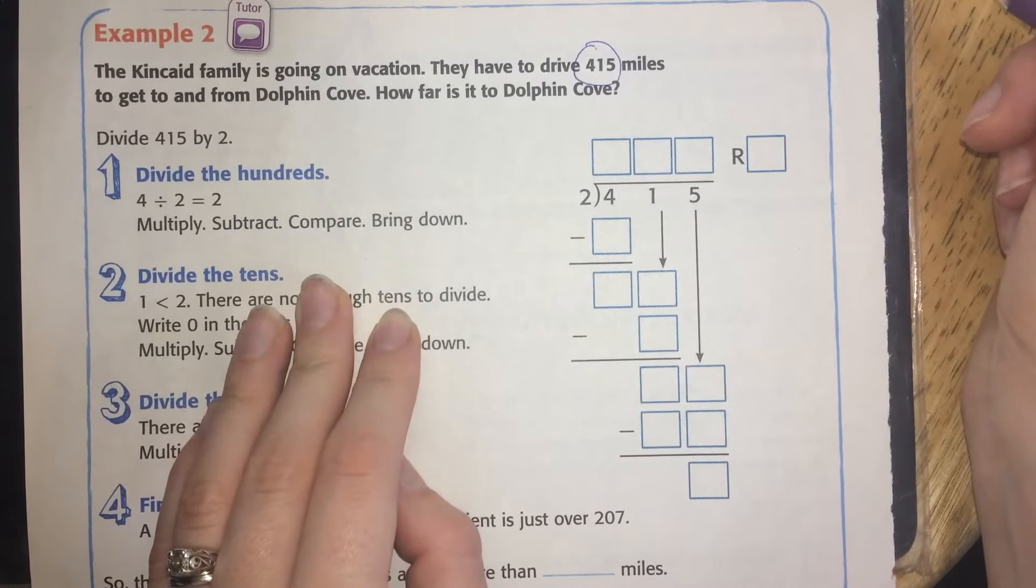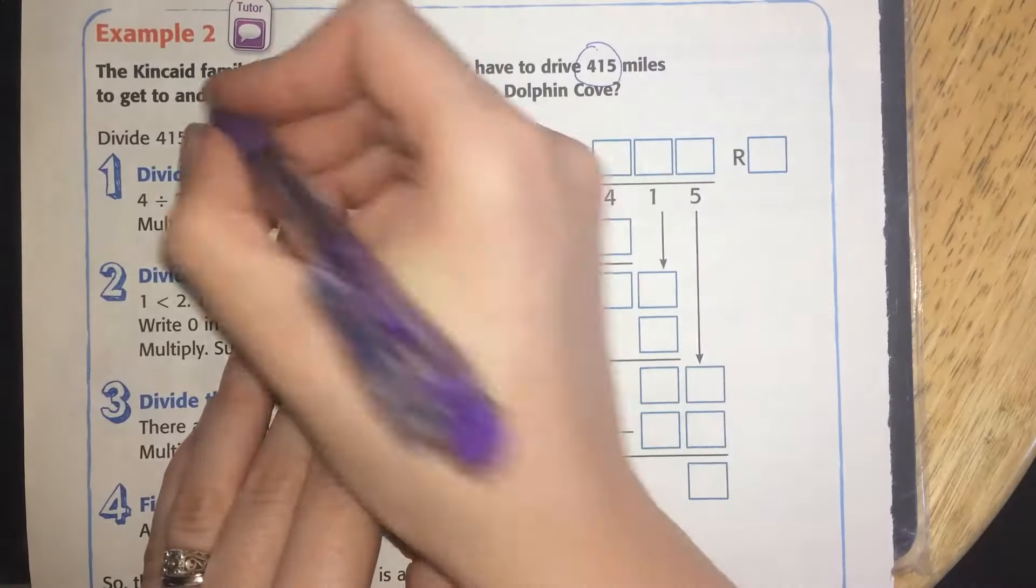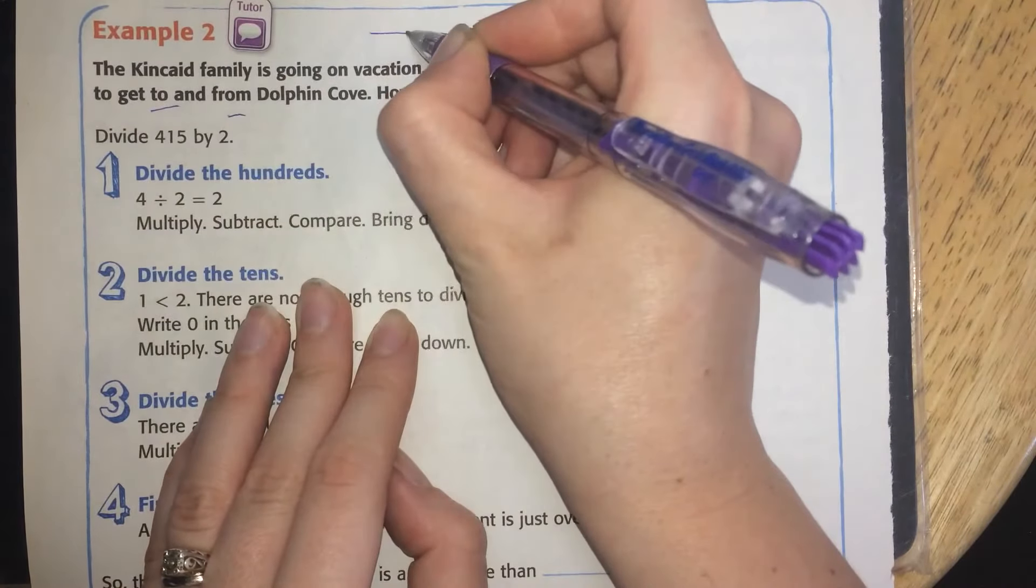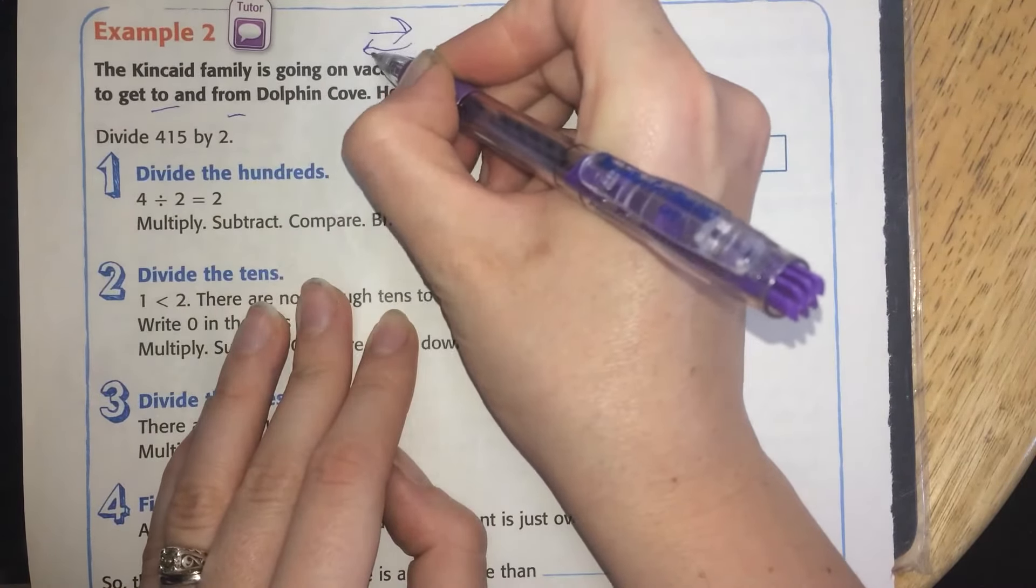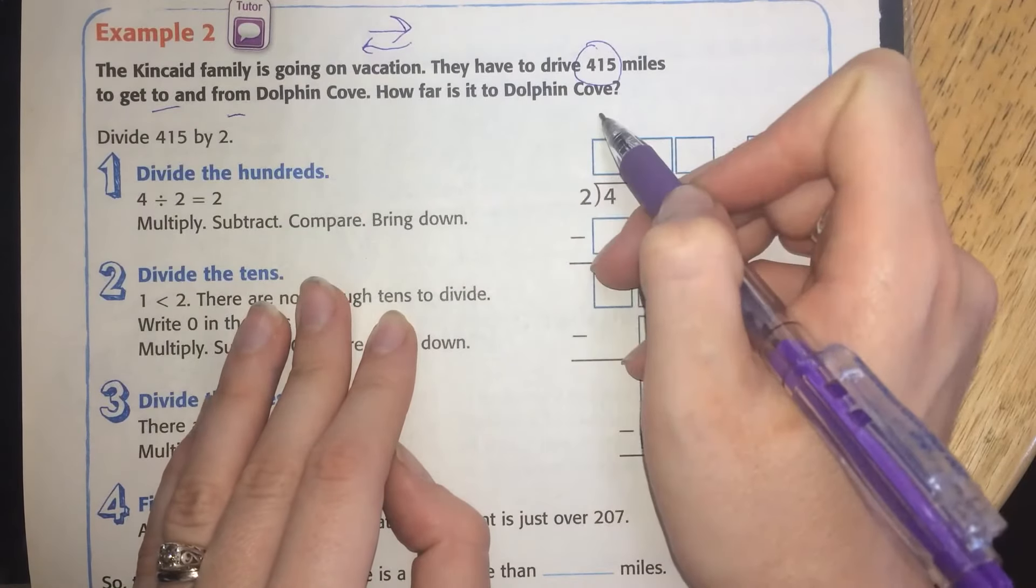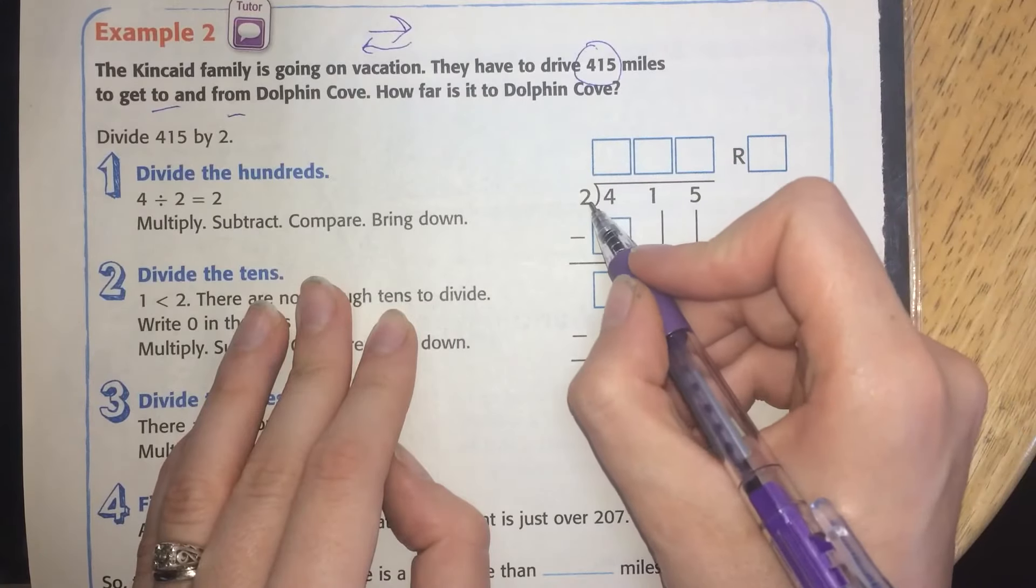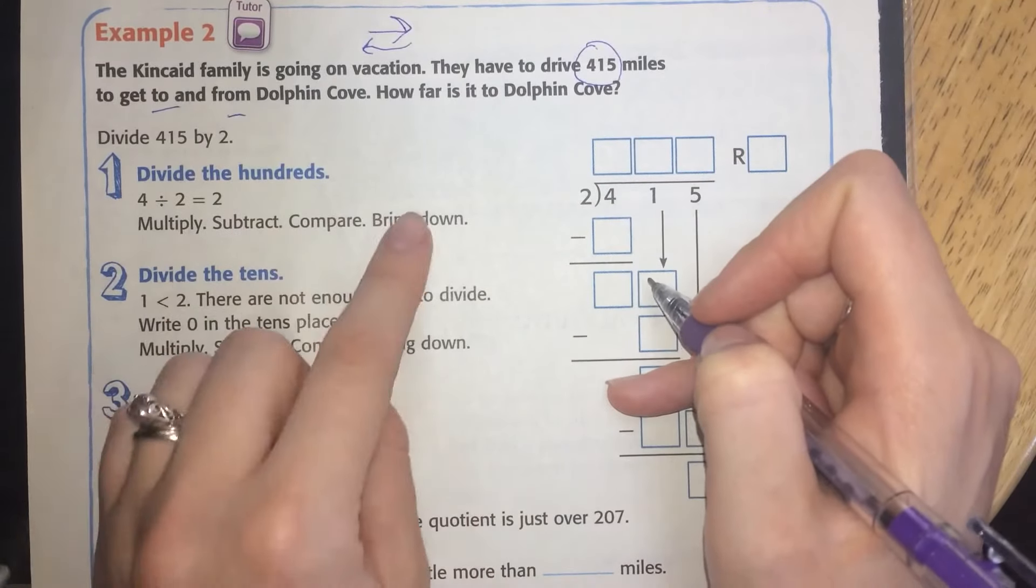It takes this to get to and from. So that means going there and back. And we want to know just how far it is to Dolphin Cove. So that means we're going to have to have a divisor of 2. So we'll just start.